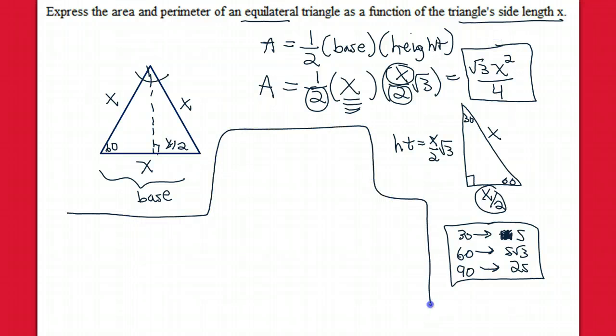Perimeter is much easier. Perimeter of the triangle is the distance around. And so the perimeter is just going to be x plus x plus x. The perimeter is going to be 3x. Okay? Great.